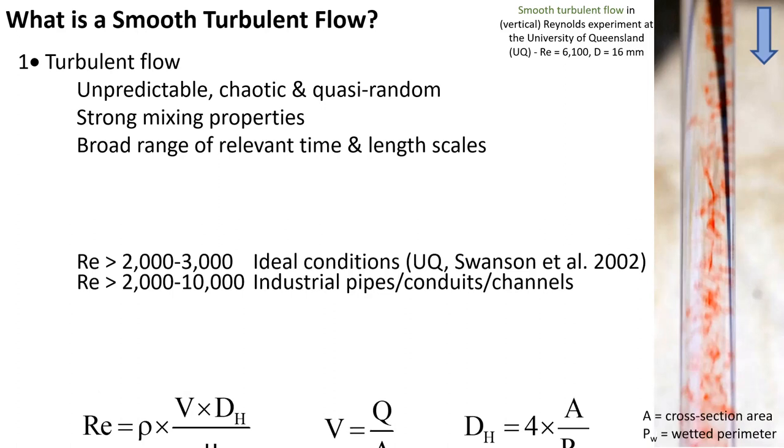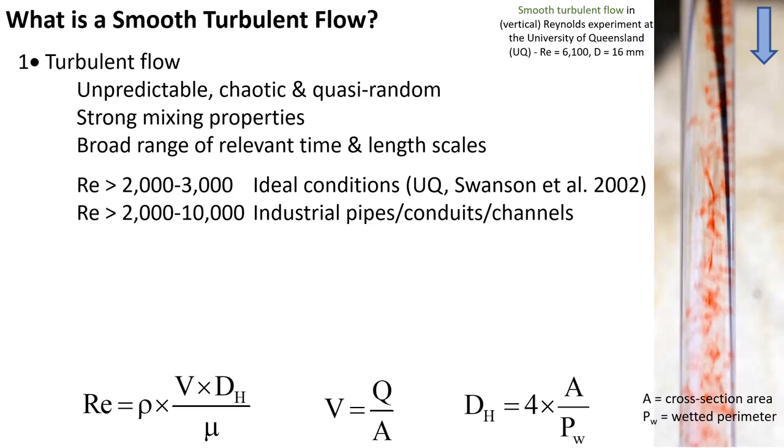Such a flow is observed when the Reynolds number is greater than 2,000 to 3,000 under ideal conditions such as the Reynolds experiment shown on the right, with the Reynolds number defined in terms of the cross-sectional velocity and the equivalent pipe diameter, while in industrial pipes, the Reynolds number would be typically greater than 2,000 to 10,000.